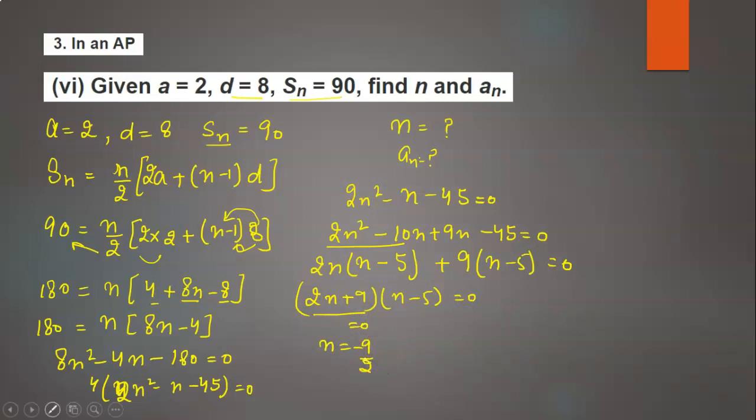The number of terms cannot be negative or a fraction. Using n minus 5 equals 0, we get n equals 5.